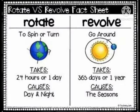The earth takes 24 hours or 1 day to complete 1 rotation, while the earth takes 365 days or 1 year to complete 1 revolution.